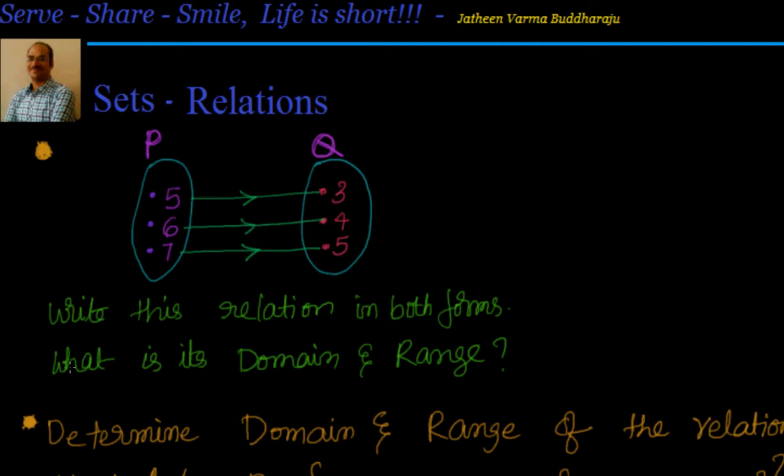First, let us write it in roster form. I will say relation R equals... Now 5 is to 3, so I will say (5,3).